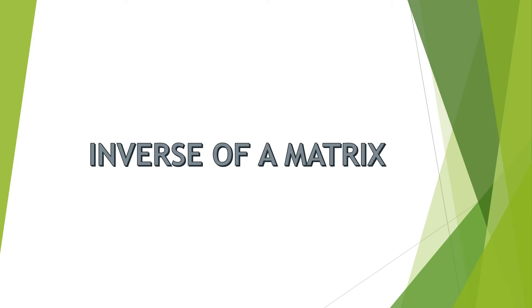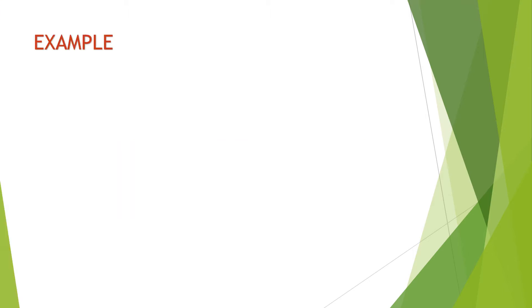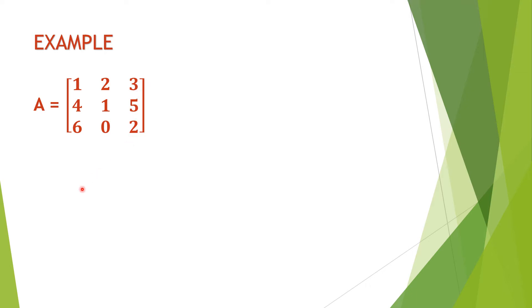Welcome to today's class. Today I'll be taking notes on the inverse of a matrix. We'll be looking at how you can find the inverse of any given matrix. Here I have my example matrix A. On the first column I have 1, 4, 6; the second column I have 2, 1, 0; the third column I have 3, 5, 2. This is the matrix, and we are going to find its inverse.